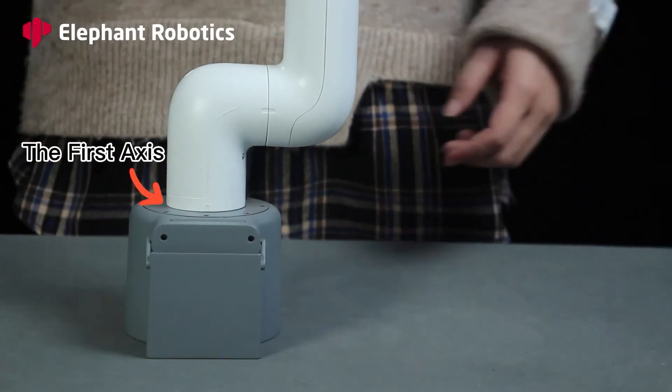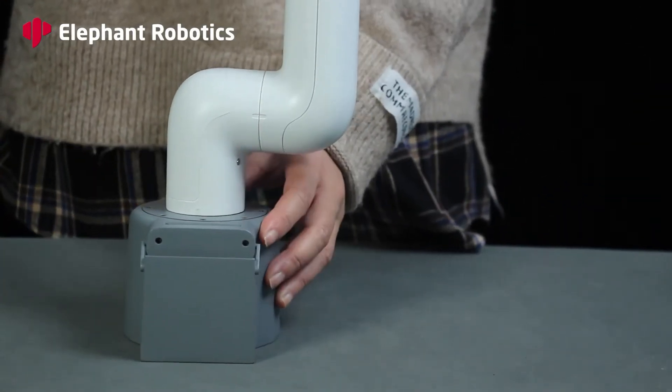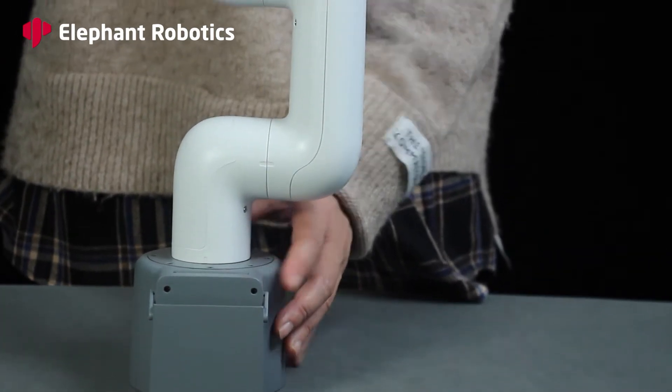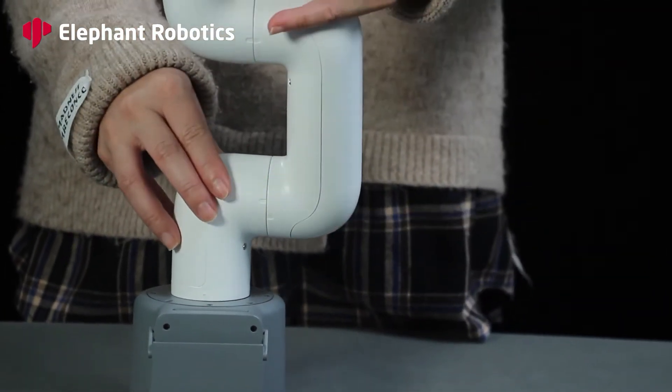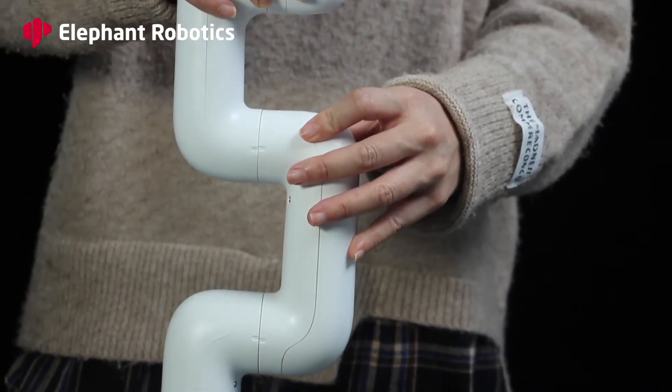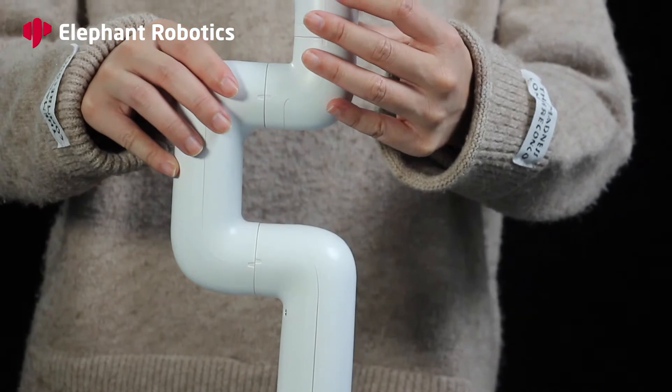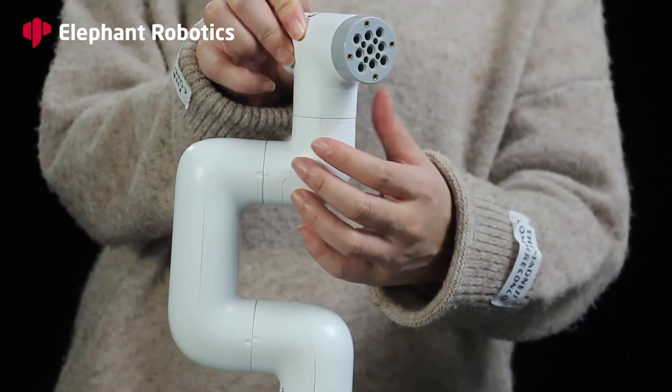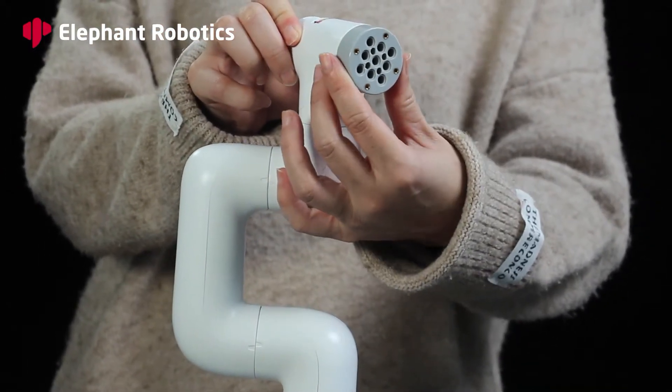The first axis refers to the joint from the top and the bottom which connects between the base and the robot arm. The second axis, the third axis, the fourth axis, the fifth axis, and the sixth axis without limit rotates.